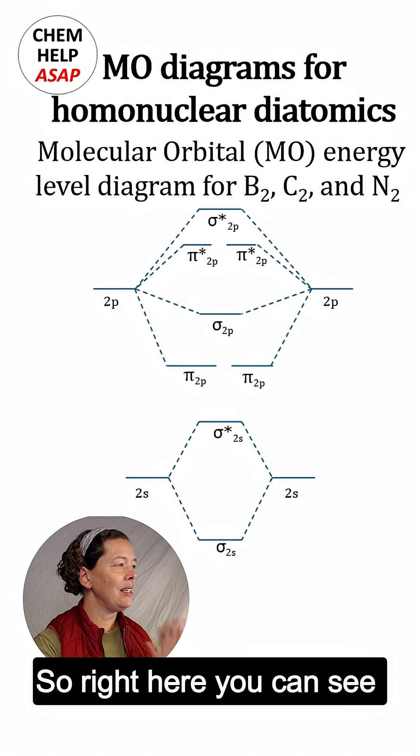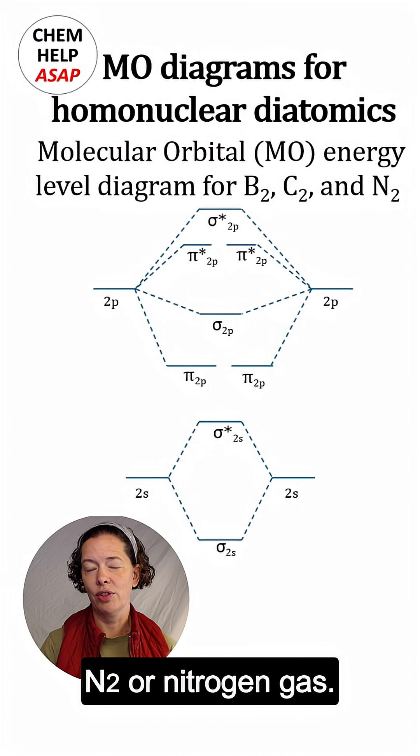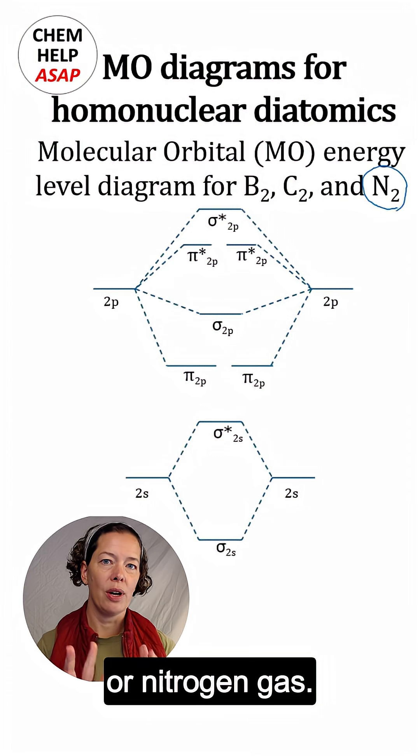Right here you can see I have all of the MOs for B2, C2, and N2 or nitrogen gas. Let's actually put in the electrons for N2 or nitrogen gas.